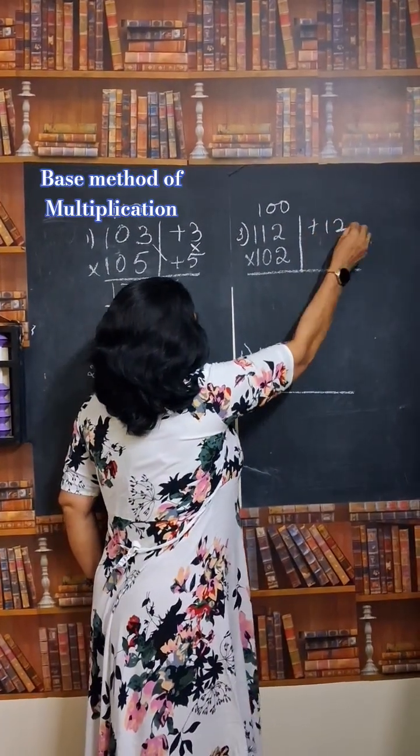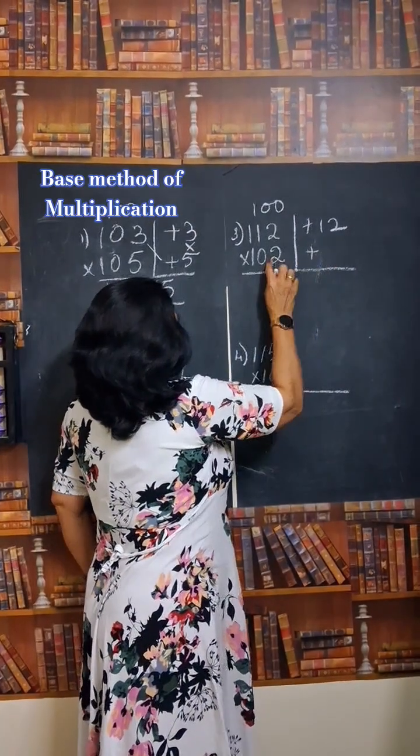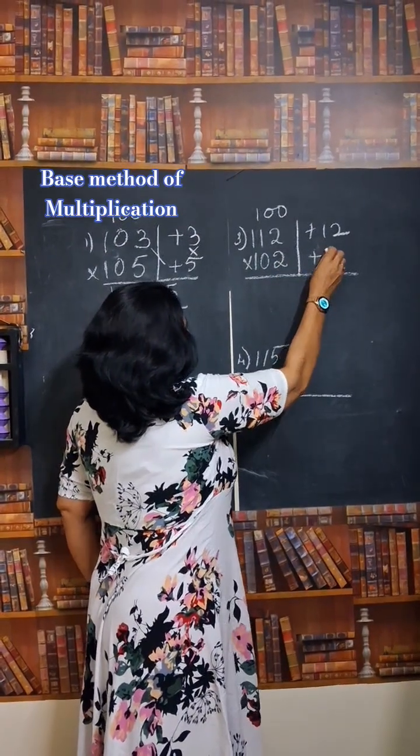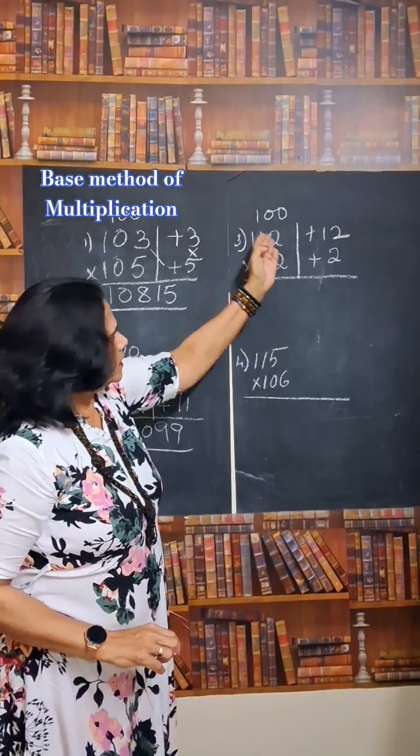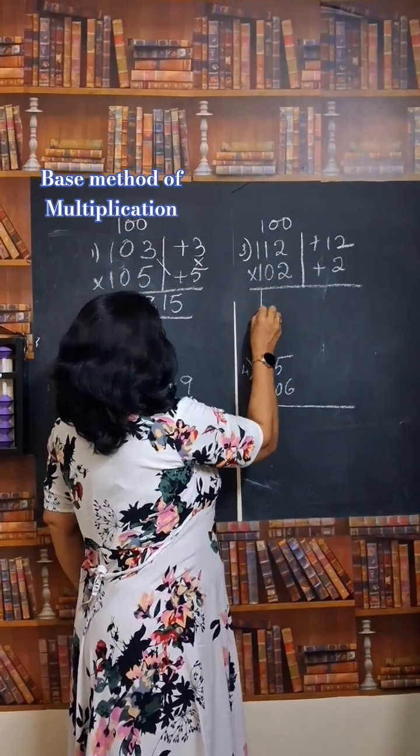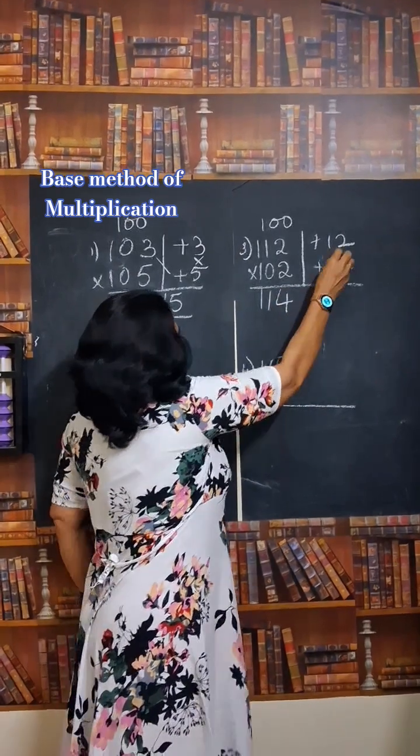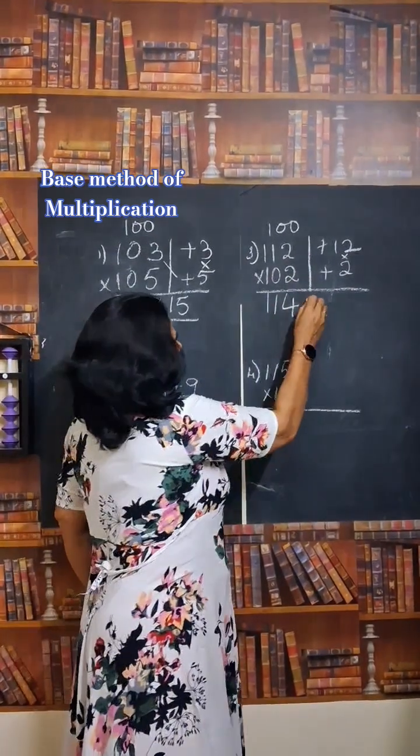And also for the next number. 102 minus 100 is 2. Now what is the number? Cross addition. 112 plus 2, that is 114. This is the multiplication. 12 into 2 is 24. So the answer is 11,424.